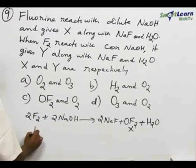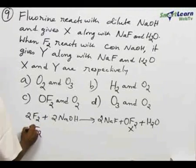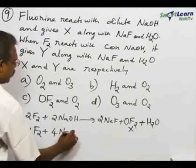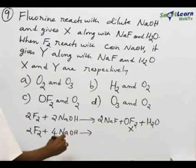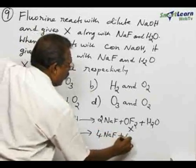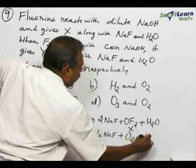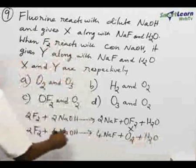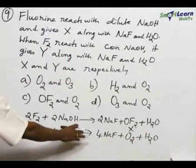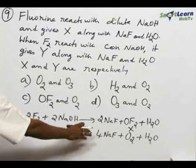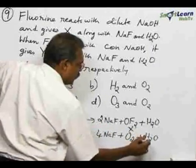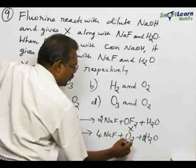Similarly, fluorine reacts with concentrated alkali: 4F2 plus 4NaOH gives 4NaF plus O2 plus 2H2O. When fluorine reacts with concentrated alkali, we get sodium fluoride, oxygen gas, and water. Here, O2 is Y.